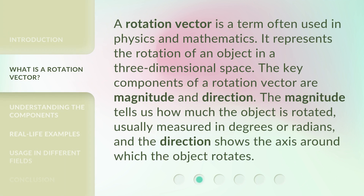A rotation vector is a term often used in physics and mathematics. It represents the rotation of an object in a three-dimensional space. The key components of a rotation vector are magnitude and direction. The magnitude tells us how much the object is rotated, usually measured in degrees or radians, and the direction shows the axis around which the object rotates.